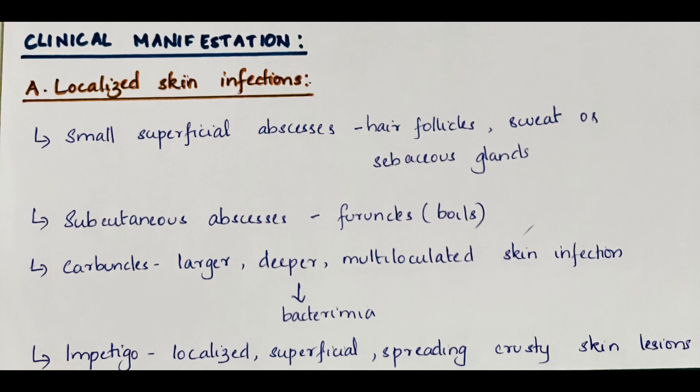Clinical manifestations. Localized skin infections are small superficial abscesses involving hair follicles, sweat or sebaceous glands. Subcutaneous abscesses called furuncles or boils often form around foreign bodies. Carbuncles are larger, deeper, multiloculated skin infections that can lead to bacteremia. Impetigo is usually localized, superficial, spreading, crusty skin lesions.